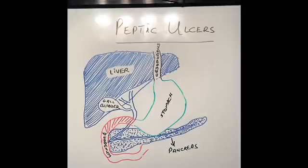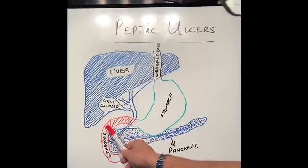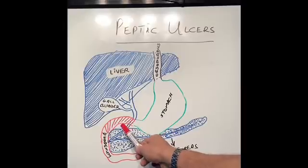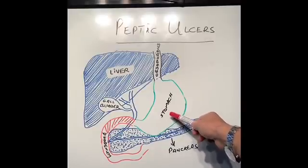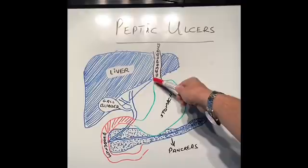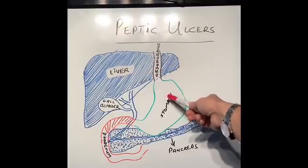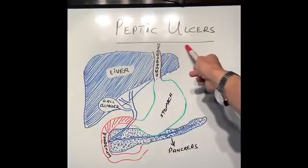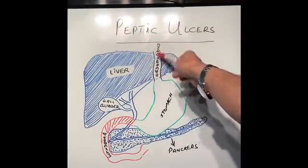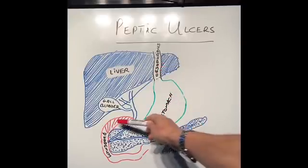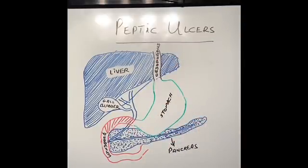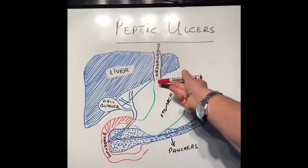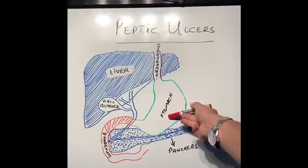The question is: what are duodenal ulcers and what are peptic ulcers? Any ulcers happening in the duodenum are called duodenal ulcers. Any ulcers happening in the stomach are called gastric ulcers or stomach ulcers. Any ulcers happening in the esophagus, especially the lower part, are called esophageal ulcers. The word peptic means ulcers happening wherever there is acid — so the lower esophagus, stomach, and duodenum are the three places where peptic ulcers take place.